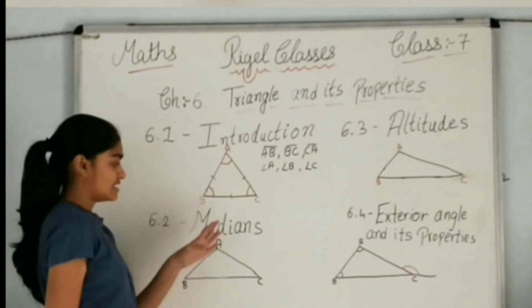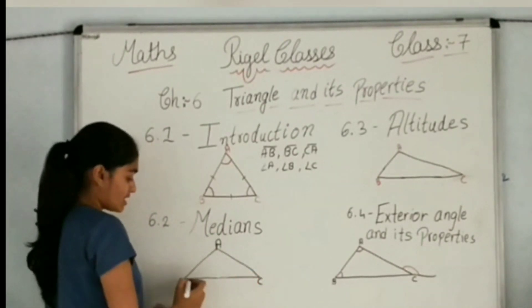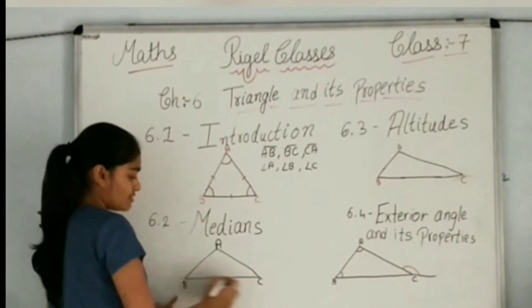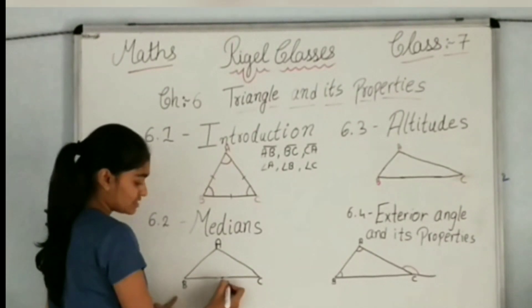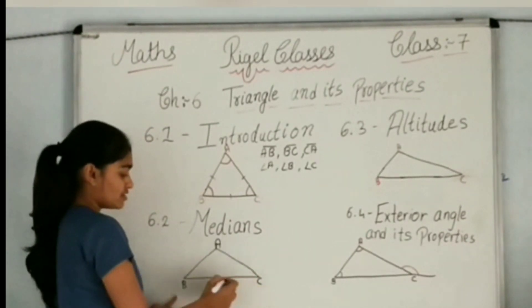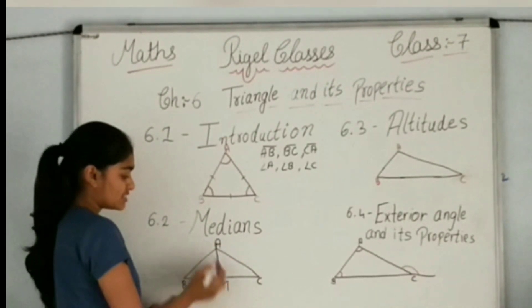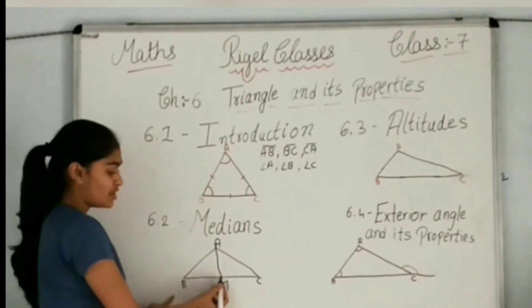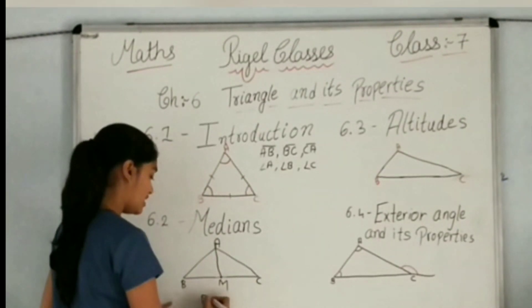Now we will see the second topic, that is median. What is a median? First, we will set BC in equal parts. That is, M is the midpoint of BC. The line joining the vertex to the midpoint of the opposite side is called a median. So here, AM is a median.